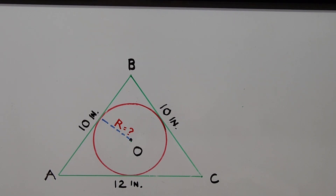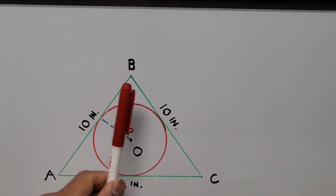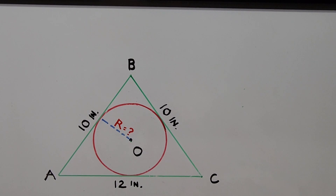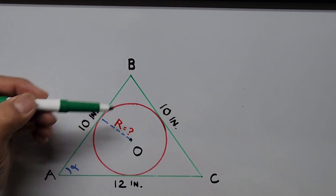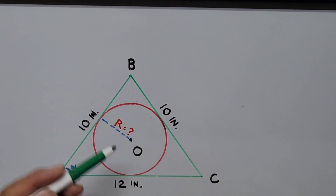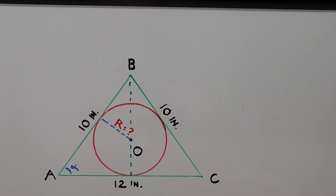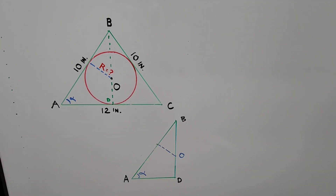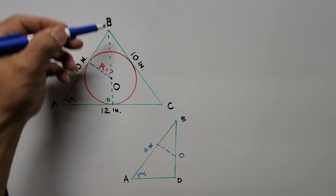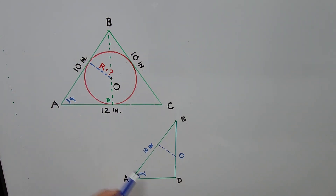First, we have to isolate half of the triangle — the left-hand side — since this is an isosceles triangle. We're dropping a line from B to the point of tangency through the center of the circle, and we call the center of segment AC as point D. So we have here half of the figure: the left half side is 10 inches, and since it's cut in half, the base is 6 inches.